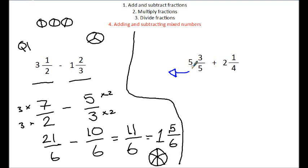So within the number 1 there would be 5 fifths. So in the number 5 we would have 25 fifths plus this extra 3. So that's 28 fifths. Here within the number 2 we would have 8 quarters plus this quarter gives us 9 over 4.